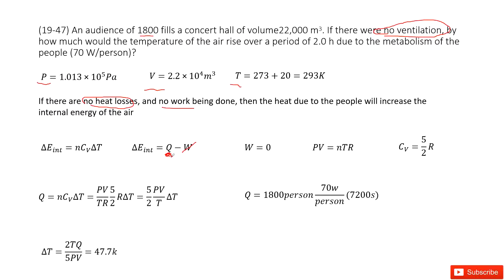Now we can consider: can we calculate Q? Yes, by definition. This is 1,800 people. For each person, it produces how much power? 70 watts. And how much time is taken? 2 hours, equal to 7,200 seconds. In this way, we can define the heat flowing into the air from the people. Now we find the internal energy change for the air.